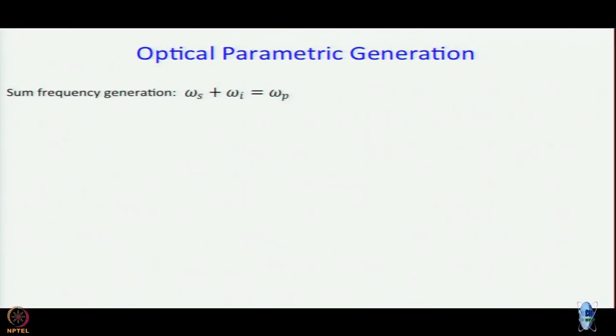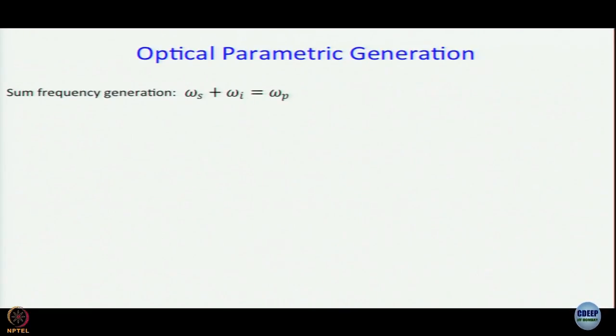In sum frequency generation, we take light of two different frequencies. We have developed the concept of signal and idler, and we talked about the relative frequencies of signal, idler, and pump. The pump is the highest frequency pulse. It might have sounded counter-intuitive at that point, but the reason we introduced it then is what we are going to use now. In sum frequency generation, two photons of smaller energy join up to give you a single photon of higher energy.